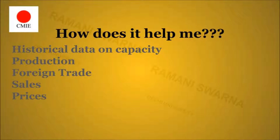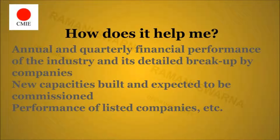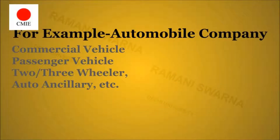Now, the introduction about this particular company — you can visit the company website CMIE — it is a wonderful platform and it gives a lot of information with respect to the Indian industries only. After that, you can see that here we have historical data on capacity, production, foreign trade, sales and prices. So anyone who is interested in sales research, or looking to see the relationship between the variables — production, foreign trade, sales and prices — can definitely visit this platform. In the same manner, this platform is useful for understanding the annual and quarterly financial performance of the industry.